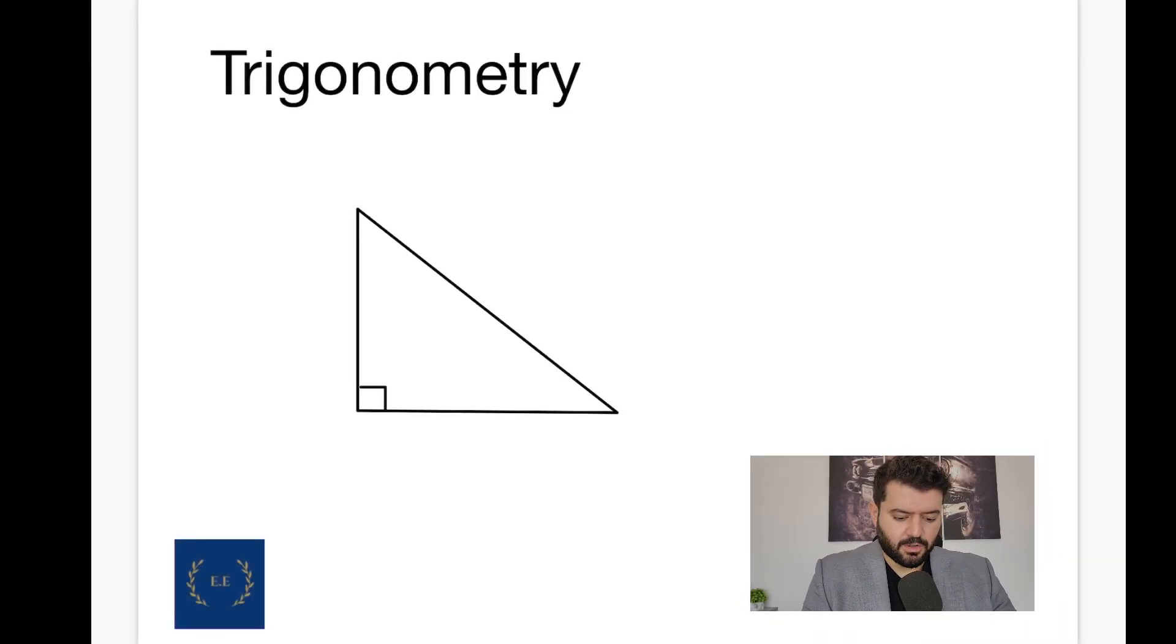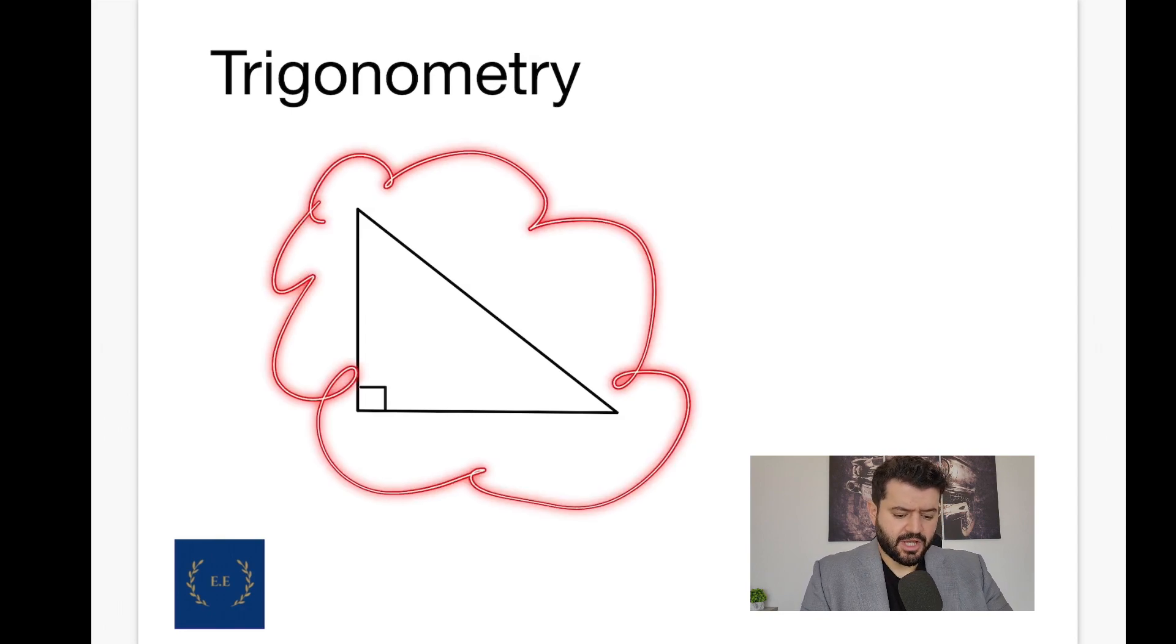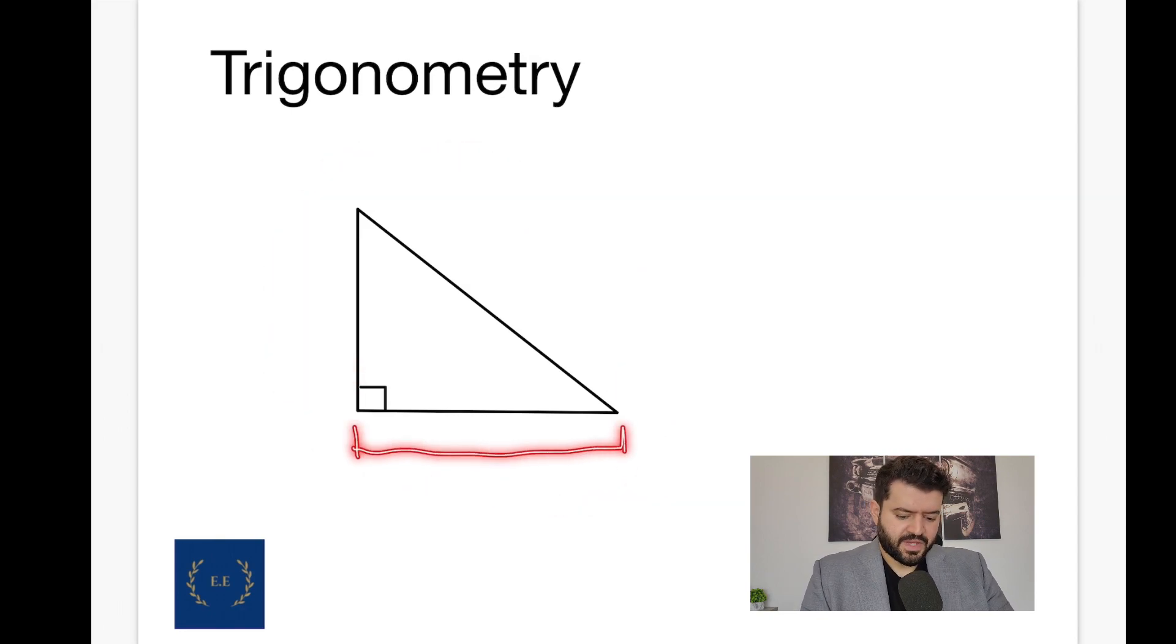In front of us, we have what we call a right angle triangle. Why do we call it a right angle triangle? The following side is perpendicular to this current side forming 90 degrees. So if you have a triangle with 90 degrees, it means you're dealing with a right angle triangle.